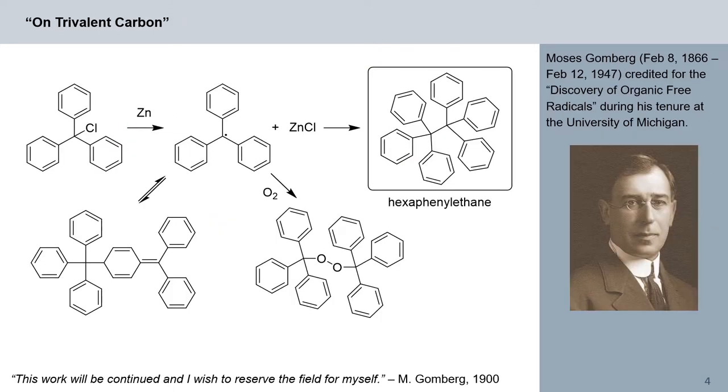Moses Gomberg is credited with the discovery of organic free radicals during his tenure at the University of Michigan. In fact, he was the first to speculate about trivalent carbon.